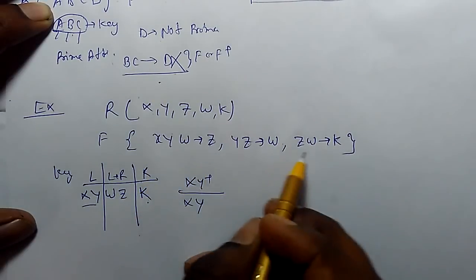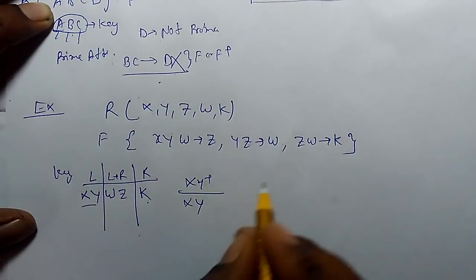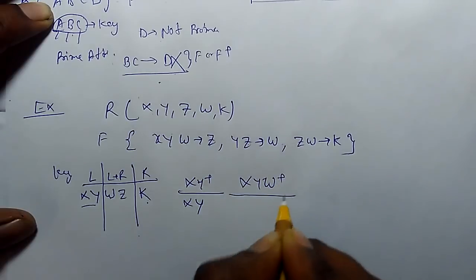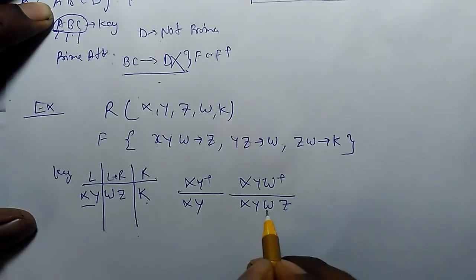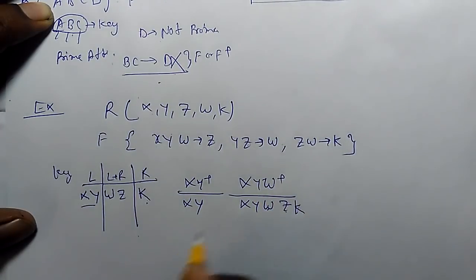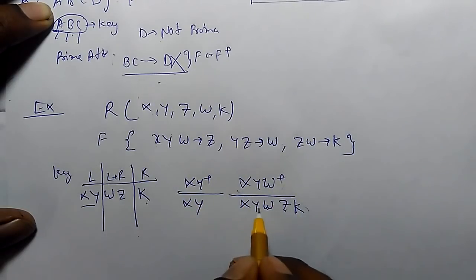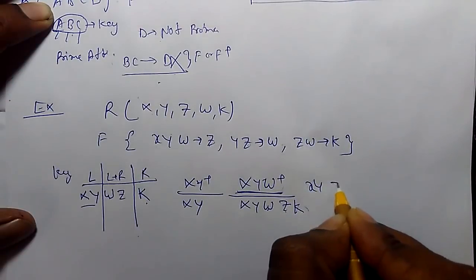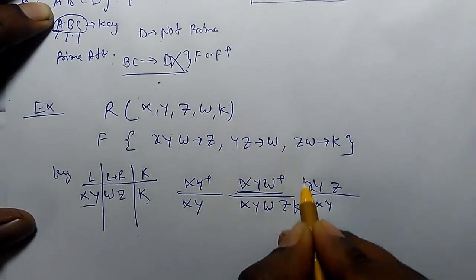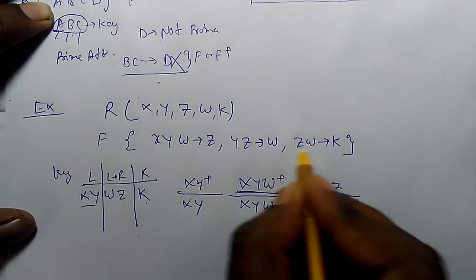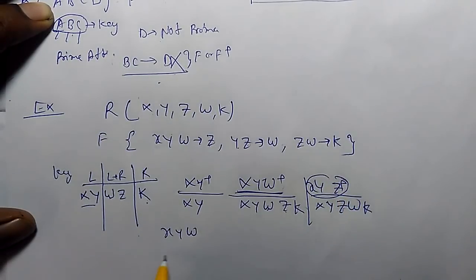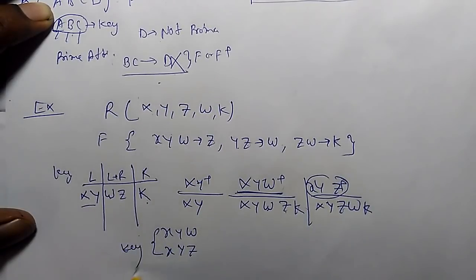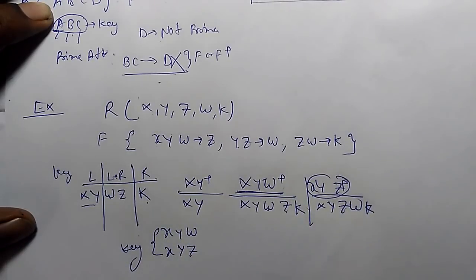From this functional dependency, XY alone cannot determine anything else, so we combine XY with W or Z. Computing the closure of XYW: by reflexivity we have XYW; XYW determines Z, and YZ determines W, which is already there; ZW determines K, so K is included. This determines all attributes, so XYW is a key. Checking XYZ: XYZ determines XYZ, YZ determines W, and ZW determines K, so XYZ is also a key. The two candidate keys are XYW and XYZ.